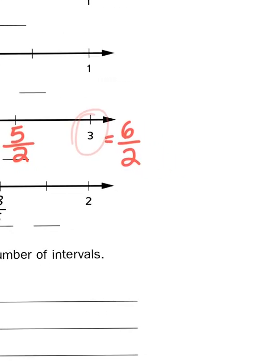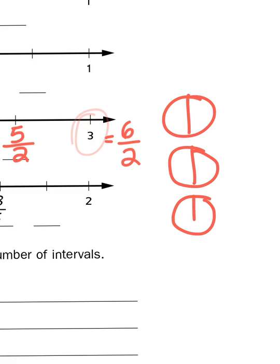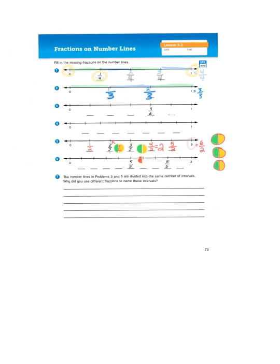And again if you need a visual, three holes each divided in half would give you six halves. Six halves. And there you are. Six halves is equivalent to three wholes. And that's how we would use a number line to help us understand fractions. And again fractions are just dividing a whole into different parts.